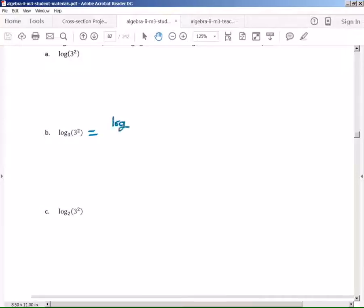we would say this equals log of 3 to the second power over log of 3. This 3 is this base right here, and this 3 raised to the second power is that 3 right there. For this one, it would be log of 3 to the second power over log of 2. This 2 is that base, and this 3 to the second power is that 3 to the second power.